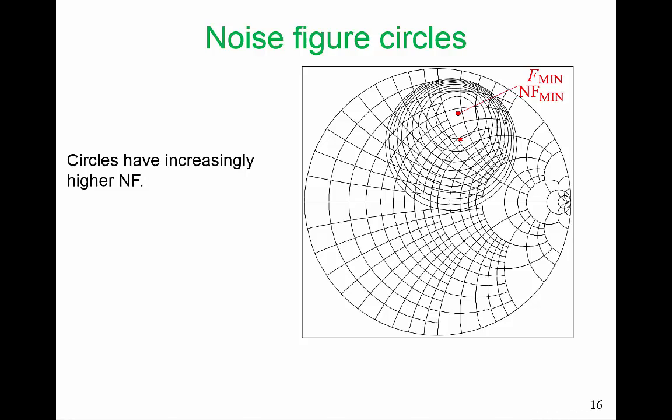We do not need to do an equivalent treatment for the output side of the active device, because the noise coming from the output of the active device doesn't really matter. Our active device has gain. And remember Friis's formula, which basically says that noise presented to the input of the first amplifier and the noise factor of that first amplifier in a chain of amplifiers is what really matters.